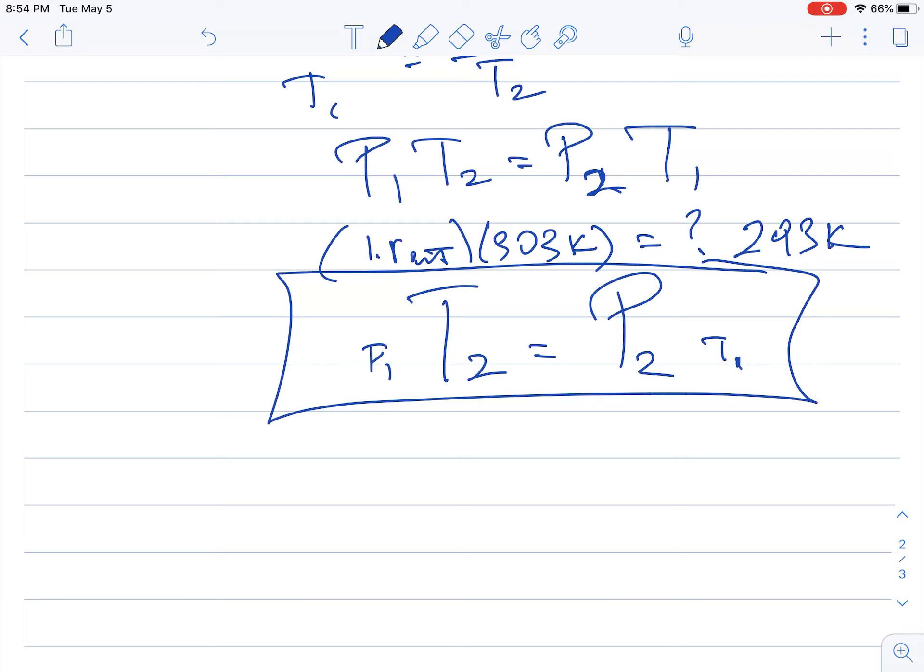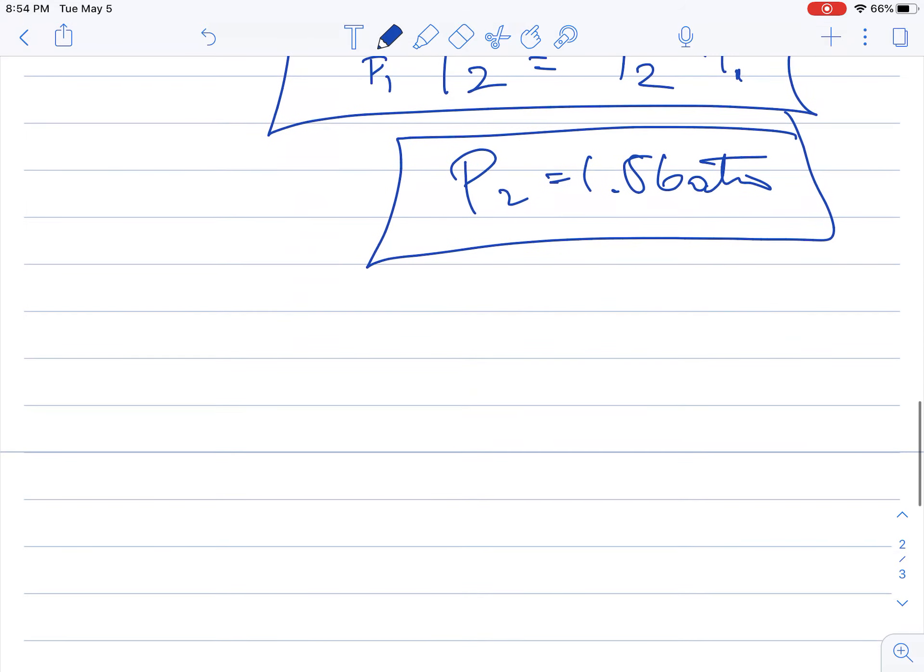In terms of how this will work, if you actually do the math—give me a second, I'm going to do a little bit of math here. It's late on a Tuesday night, and I can't do this in my head. 1.8 times 303 divided by 293, I get that new pressure to be 1.86 atmospheres.